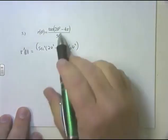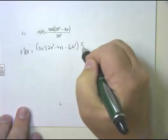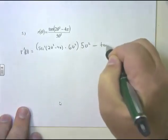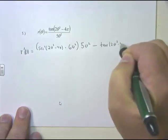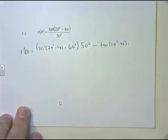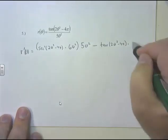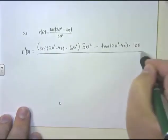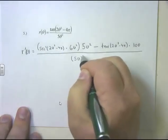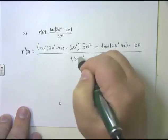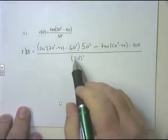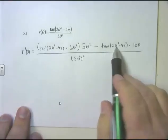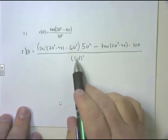The big picture was the quotient rule. So it's: derivative of the top times the bottom, 5θ², minus the top, tan(2θ³ - 4π), times the derivative of the bottom. Derivative of 5θ² is 10θ. All over the bottom squared, (5θ²)². You can write 5θ² squared as 25θ⁴ if you like, but this is really what we want to see.